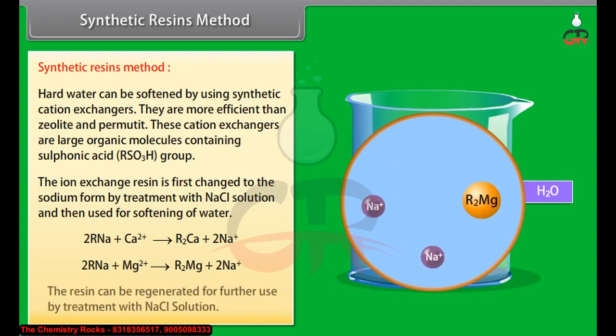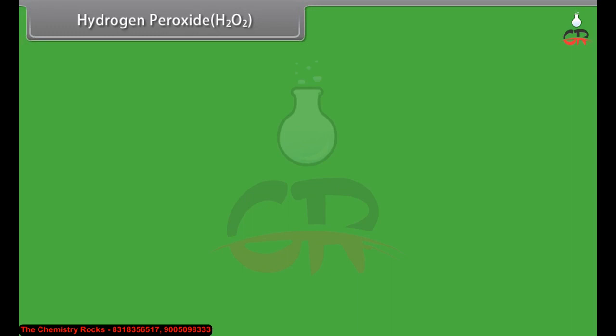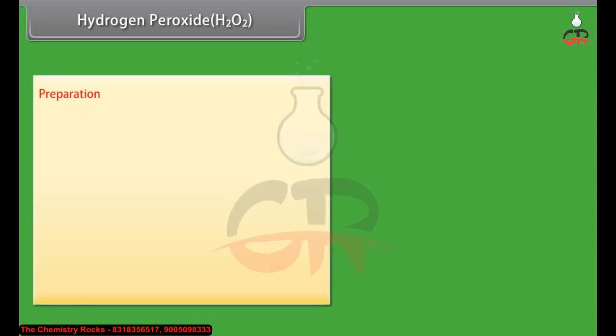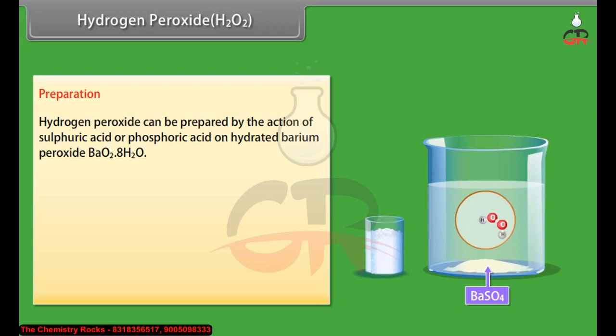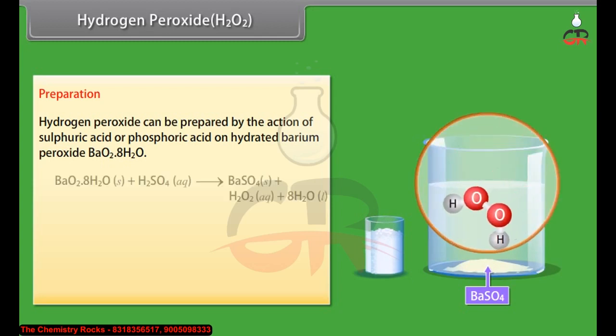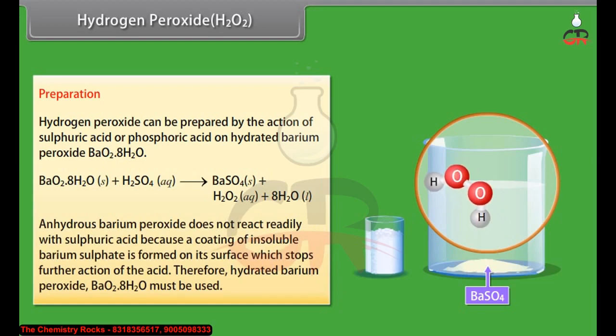Hydrogen peroxide H2O2 - Preparation: Hydrogen peroxide can be prepared by the action of sulfuric acid or phosphoric acid on hydrated barium peroxide. Anhydrous barium peroxide does not react readily with sulfuric acid because a coating of insoluble barium sulfate is formed on its surface which stops further action of the acid. Therefore, hydrated barium peroxide BaO2·8H2O must be used.